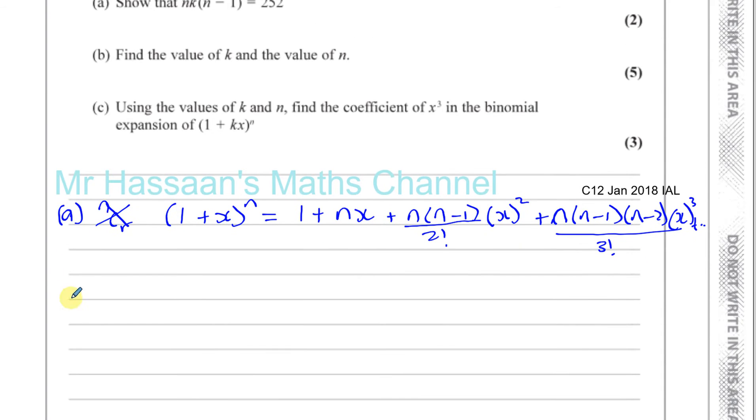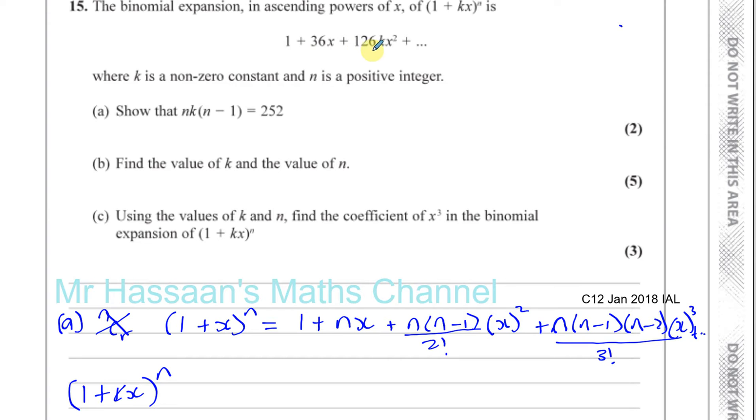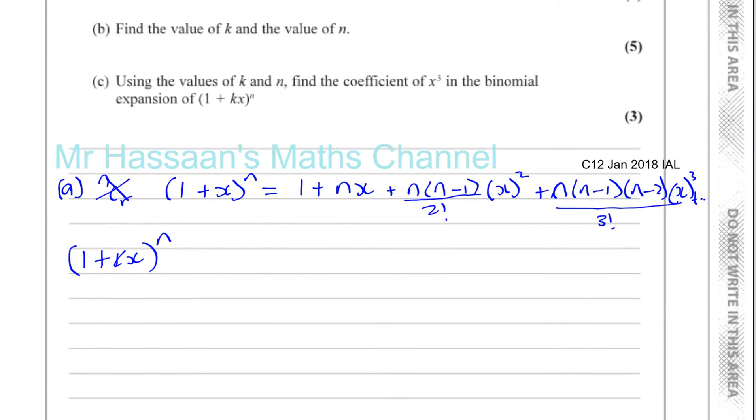So they've told us that 1 plus kx to the power of n will give us 1 plus 36x plus 126kx squared. So basically, we need to expand this up to x squared. Okay, so I'm going to use this form here. So we have a 1, there's a 1 here, so there's no problem.